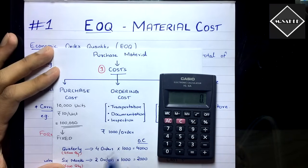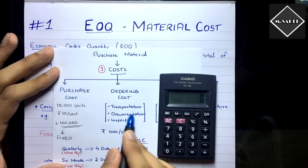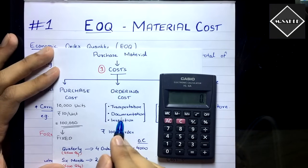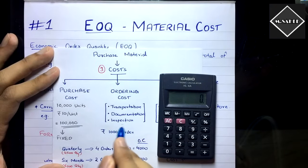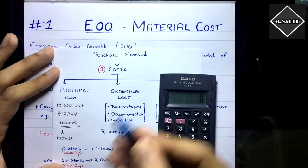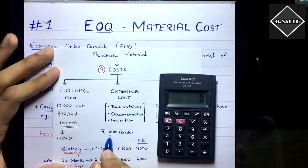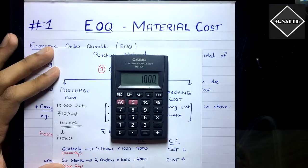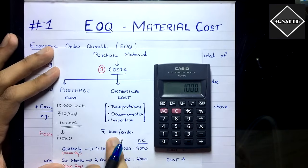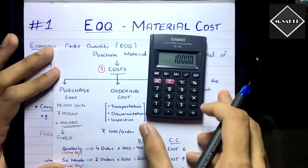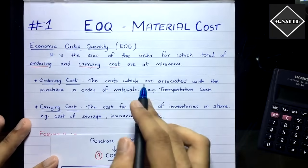Ordering cost is the cost you incur each and every time you make an order — such as shipping charges, transportation charges, documentation work, and inspection charges after receiving the order to check quality and quantity. All these come under ordering cost. Let's say the ordering cost is ₹1,000 per order. If you're making 10 orders in a year, then 10 × ₹1,000 = ₹10,000 would be your total ordering cost.